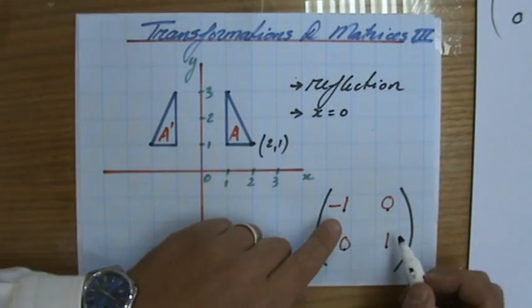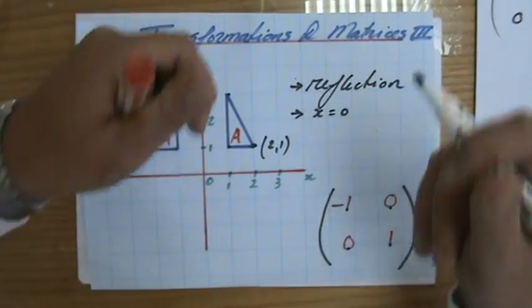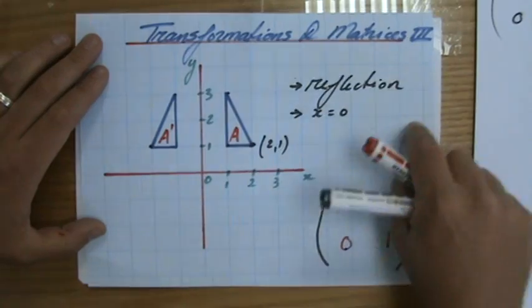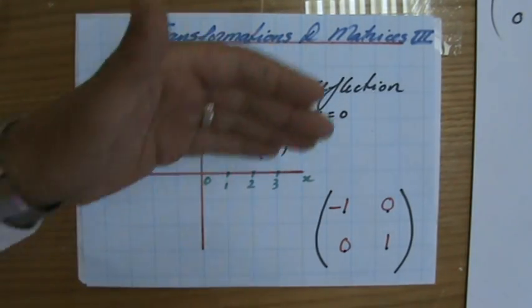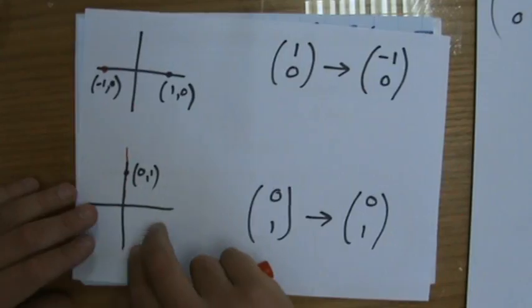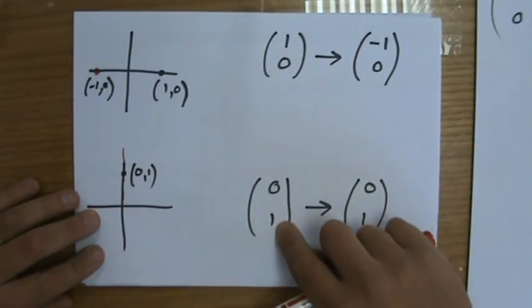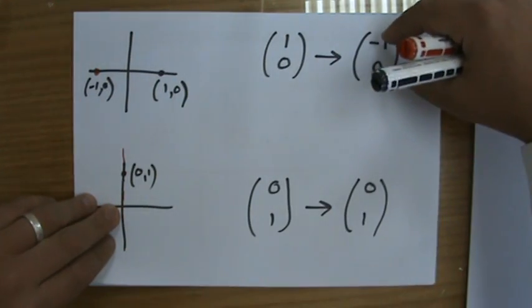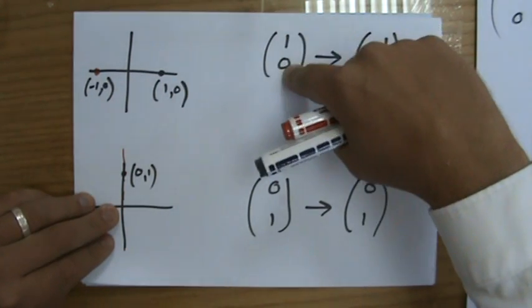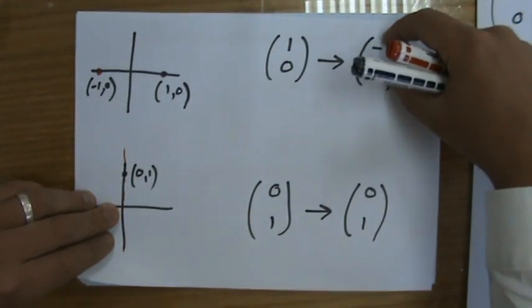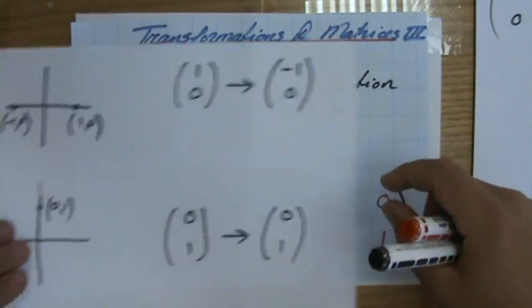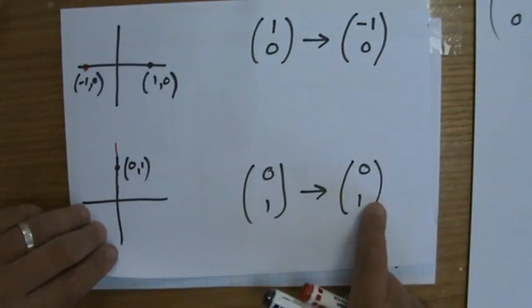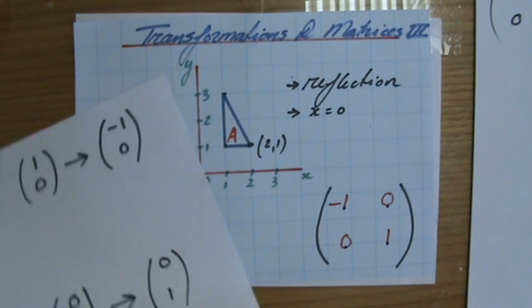So again, you decide upon the type of transformation, then you evaluate for that transformation two points: (1,0) and (0,1). And you have a look at what happens with that point after that particular transformation. (1,0) in this situation becomes (-1,0), and the second point you do it, and you have to do it in this order, is (0,1), and that will stay (0,1).